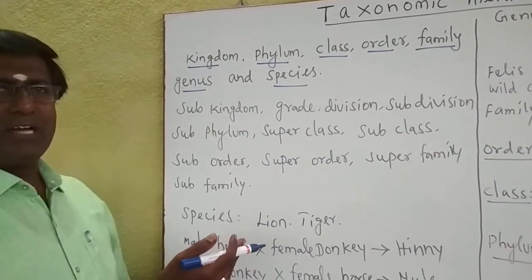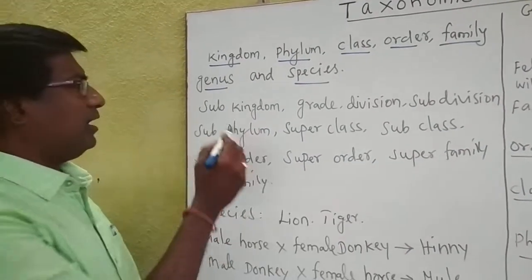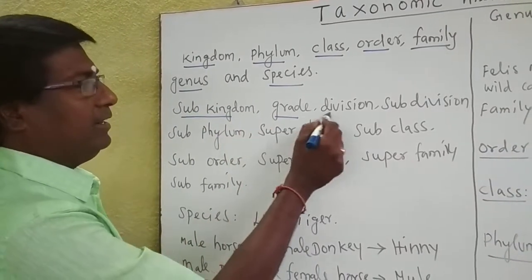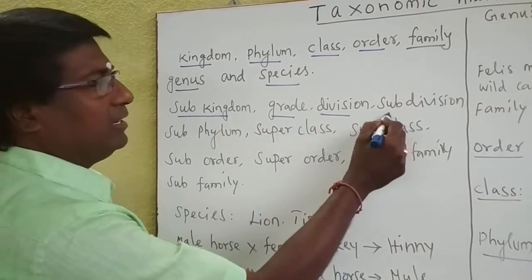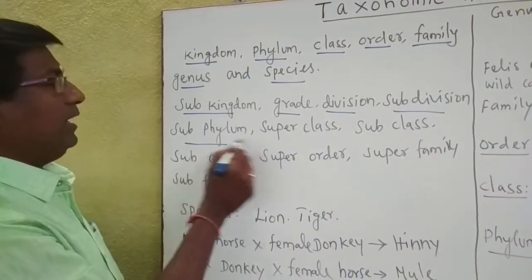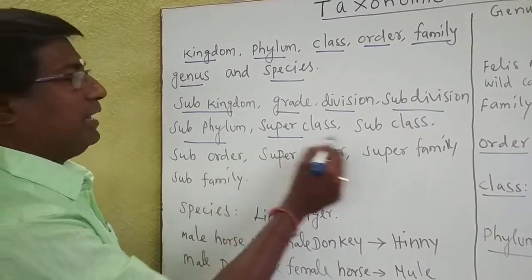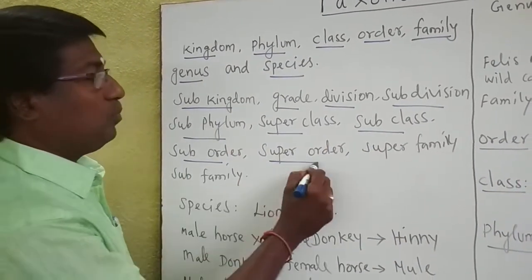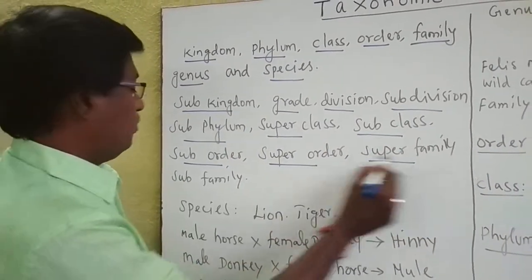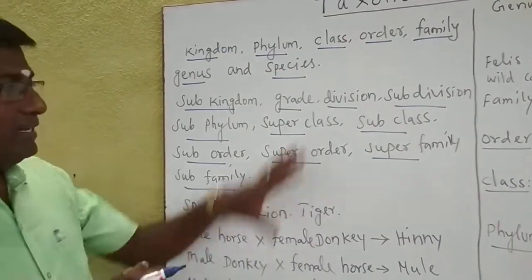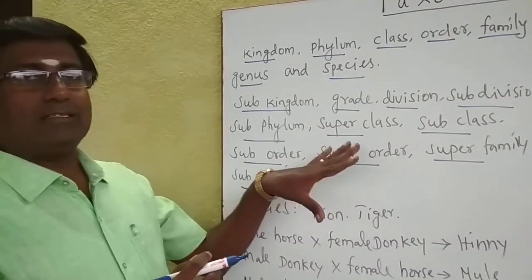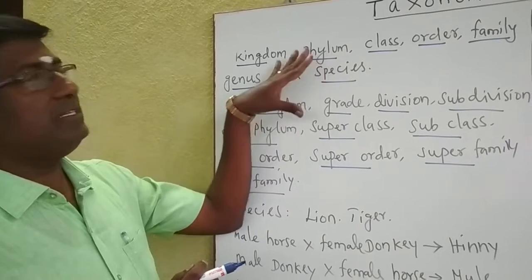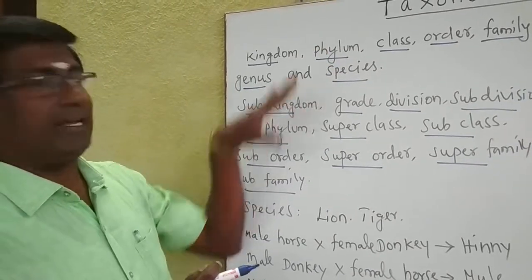Some intermediate categories are also there. They are: subkingdom, grade, division, subdivision, subphylum, superclass, subclass, suborder, superorder, superfamily, and subfamily. These intermediate categories come in between the seven main categories.